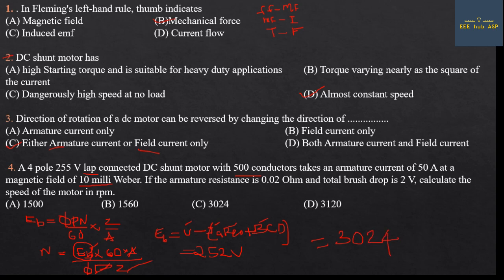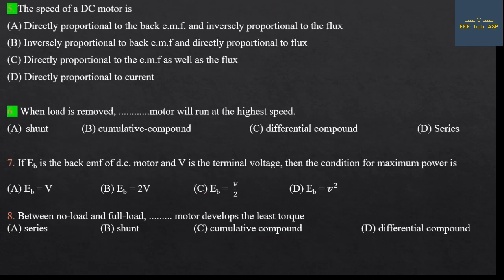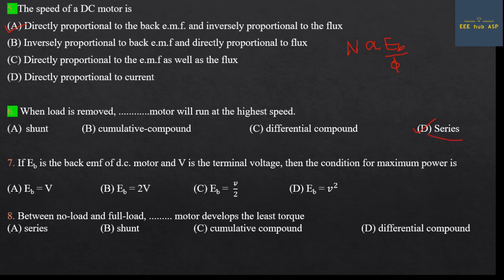Fifth question: The speed of a DC series motor — when load is removed, the motor will run at the highest speed, dangerously high speed. A DC series motor at no load runs at a dangerously high speed. Answer: Option D.